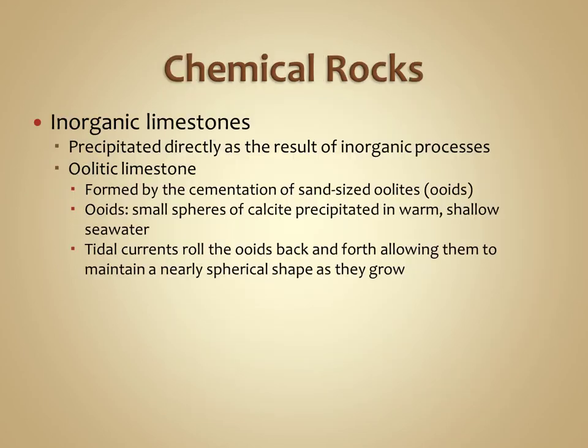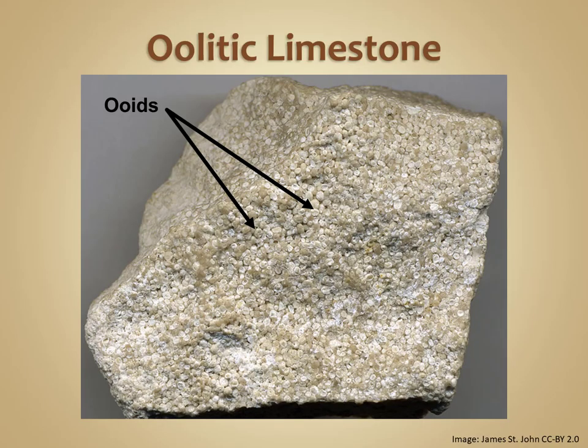Limestones can also form through inorganic processes. One of the most common inorganic limestones is known as oolitic limestone. Oolitic limestone is made up of small, sand-sized ooids. Ooids are small spheres of calcite that are precipitated in very warm, shallow seawater through inorganic processes.